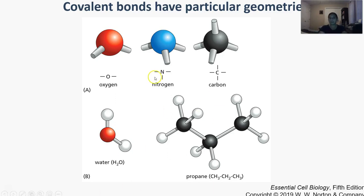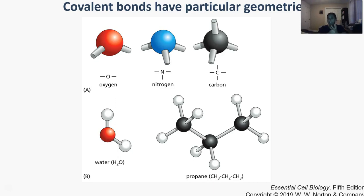Here we have some examples of individual bonds that can happen between molecules — all examples of single bonds with oxygen, nitrogen, or carbon, and the different geometries they can present. The water molecule has a very distinct shape, partly because of the size of the individual atoms that are interacting, as well as the charges they are presenting between them.